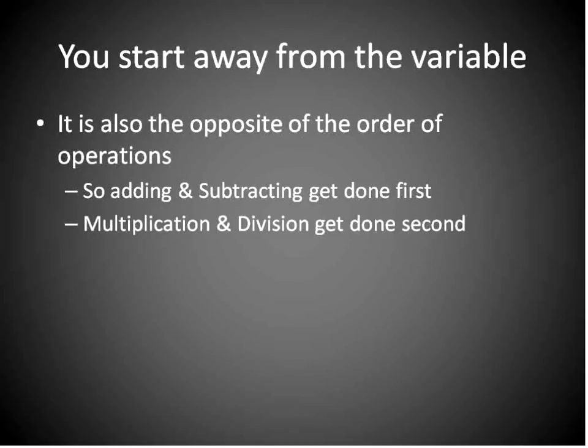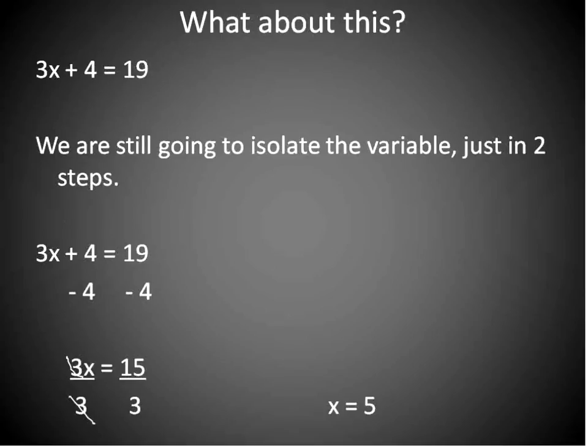So basically, there's two ways to look at it. One, you can look at it as you start far away from the variable, and you move closer into the variable. Notice with this one here, we could have tried dividing it by 3, but what we do instead, we get rid of the things that are farthest from the variable and work our way in to getting the variable by itself.